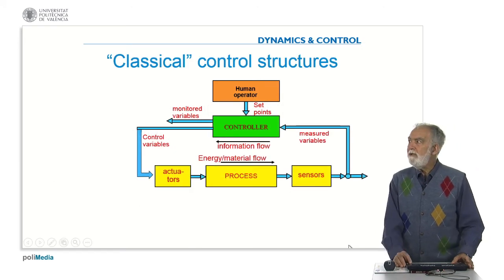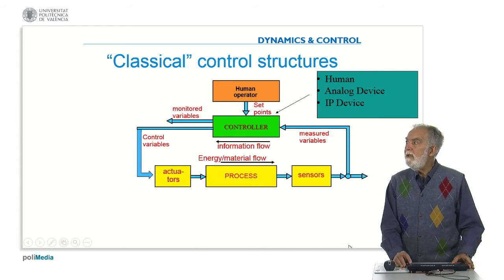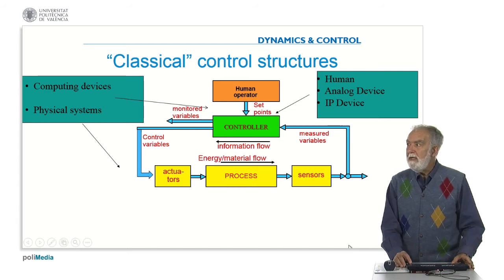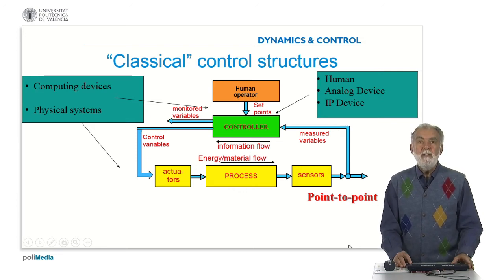The classical control structure is shown here in this slide. You see a basic control loop with the controller, the process, actuator, and sensors. This controller can be a human operator, or it can be an analog device, or a computer information processing device. The actuators and the controller can be implemented as computing devices or physical systems. The information is attached to each loop, so there is a point-to-point connection: the process sends information to the sensors, the sensors to the controller, the controller to the actuators, and the actuator to the process.